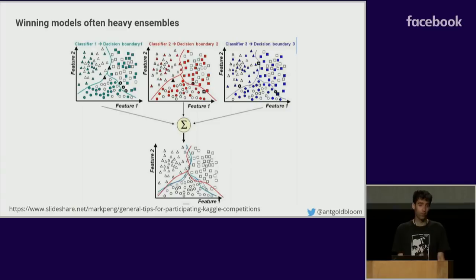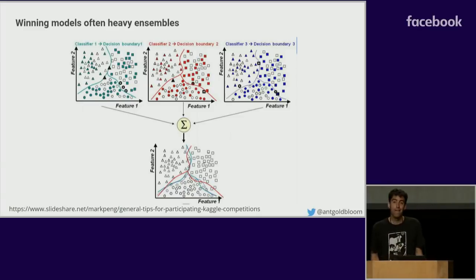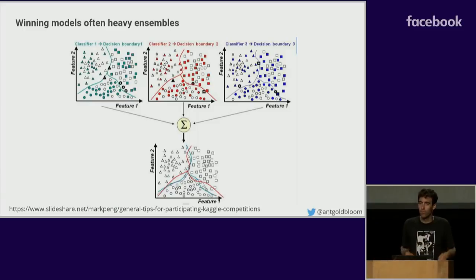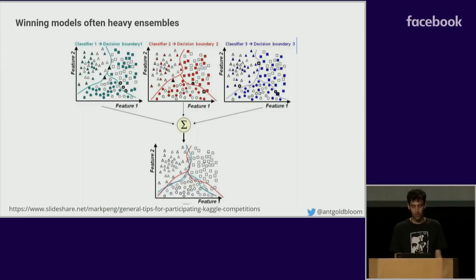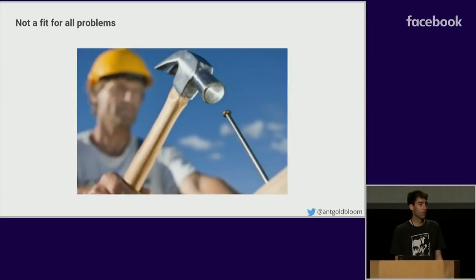Winning models are often heavy ensembles. So you can see, to get from, maybe a single model gets you 99% of the accuracy. But, related to the slide I just showed a minute ago, or a second ago, the previous slide, to get that extra little bit of predictive power, often a lot of complexity is added to the winning solution by adding more ensembles. And then finally, challenges are not a fit for every problem. Particularly, it can be hard, not impossible, but hard to set up problems, unsupervised problems, for instance. Very easy with supervised machine learning can be more challenging with unsupervised machine learning.